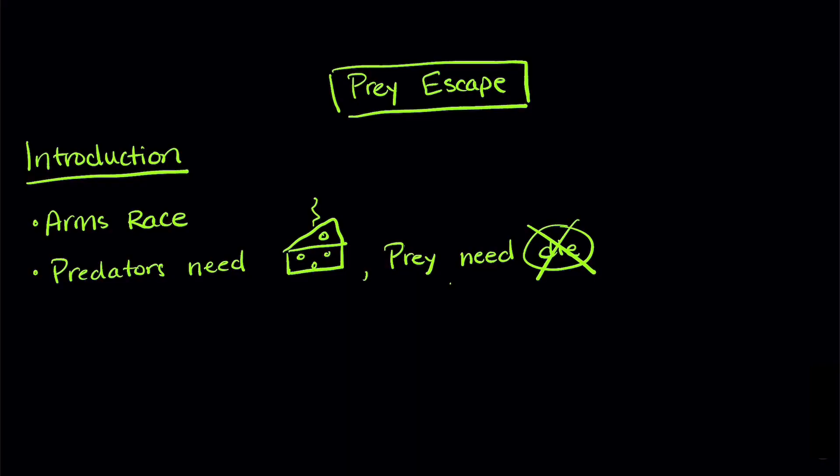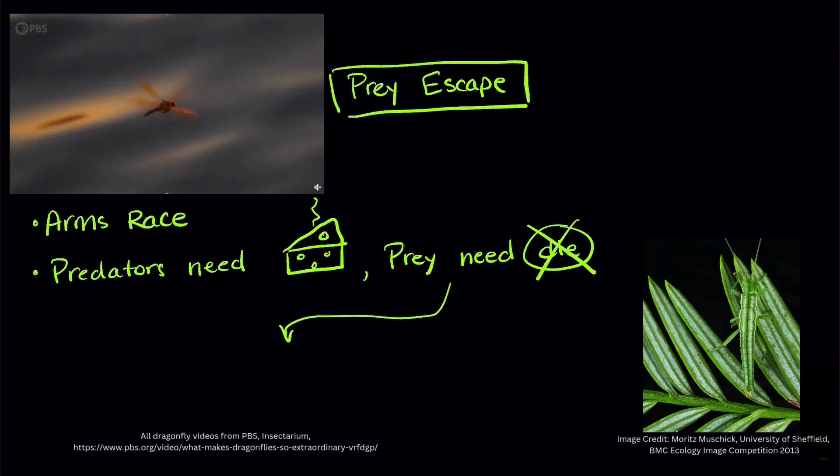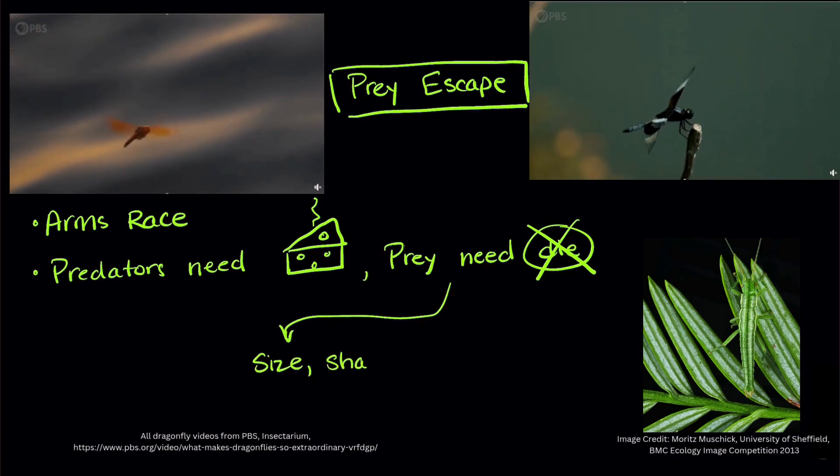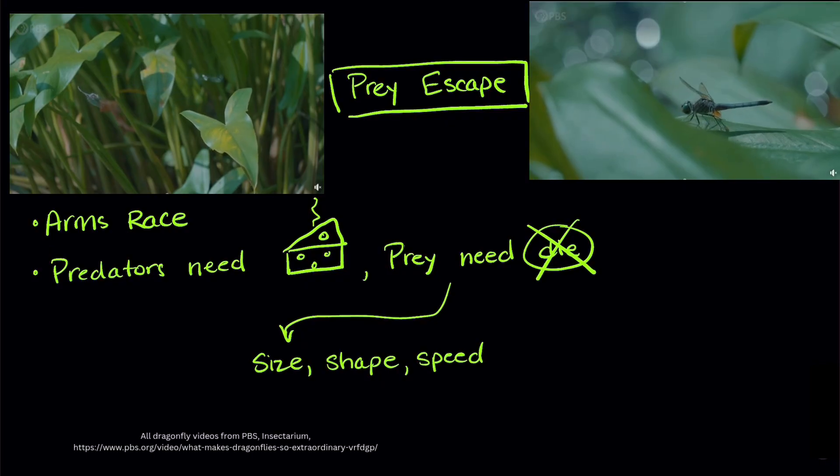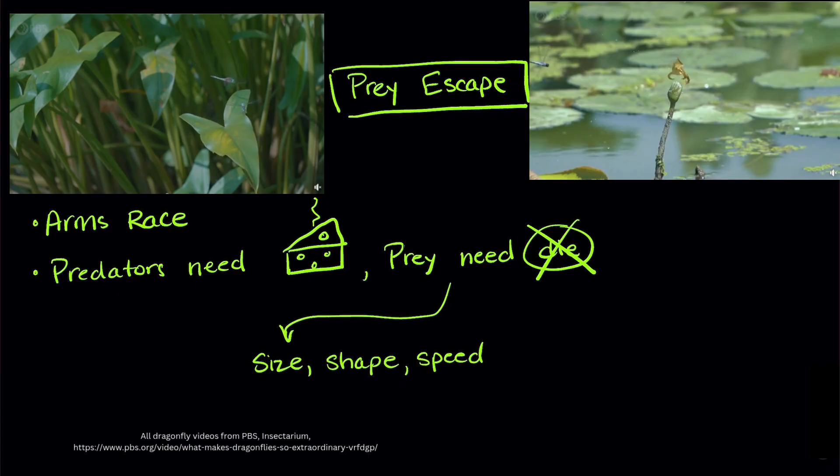Prey have lots of traits that can help them survive, like sizes, shapes, their speed. A quick example, insects have really mobile wings that could help them maneuver away from the quick tongues of lizards or frogs.